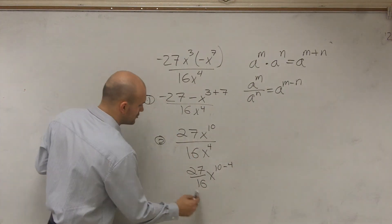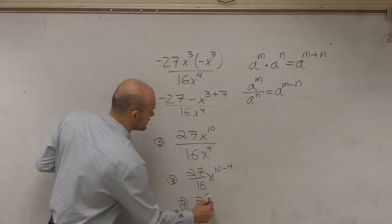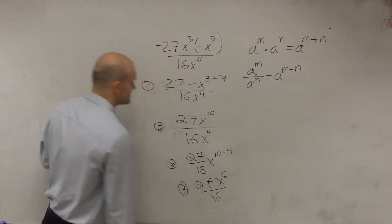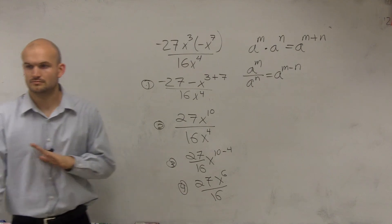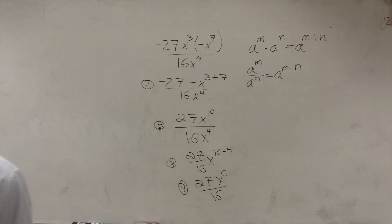Since it's positive, it's going to remain on the numerator. So therefore, my final answer is 27x to the sixth divided by 16. Done. Great job. Thank you very much. OK, got it? Thank you.